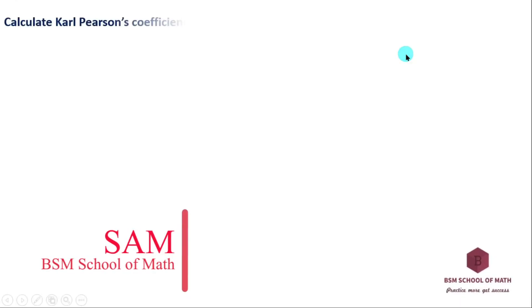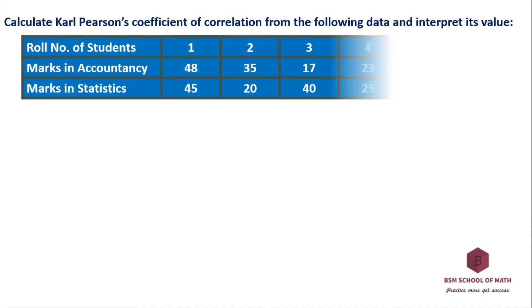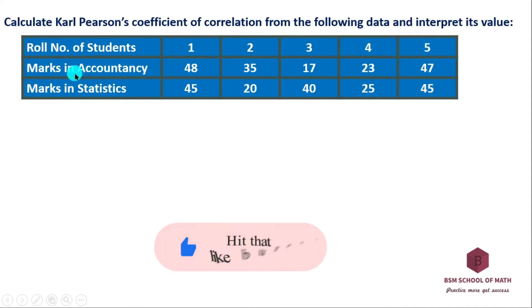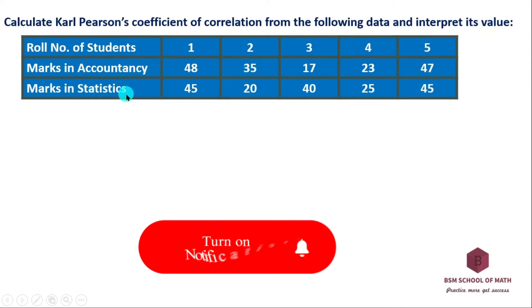Hello and welcome. This is Sam from BSMS Club. We are going to calculate the correlation coefficient using deviation taken from the actual mean, from the following data of roll numbers of five students with marks in accountancy and marks in statistics.